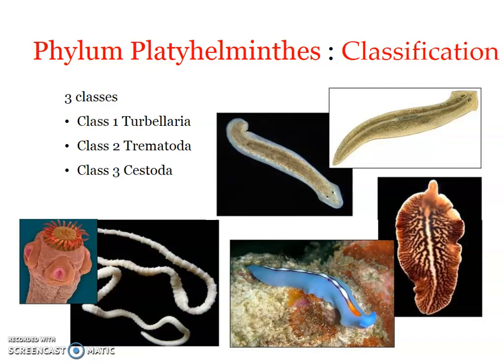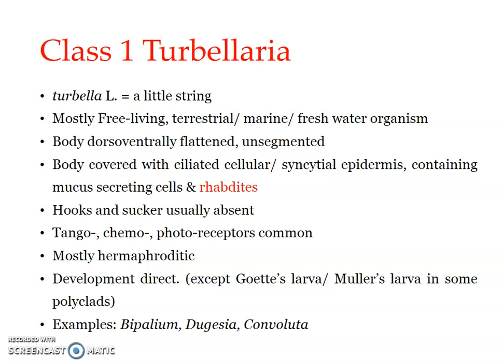This classification is adopted from Haimar 1951. We will look in detail at the important features of Turbellaria and Trematoda.